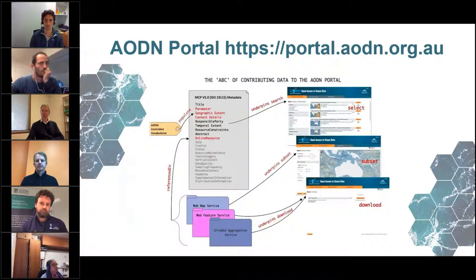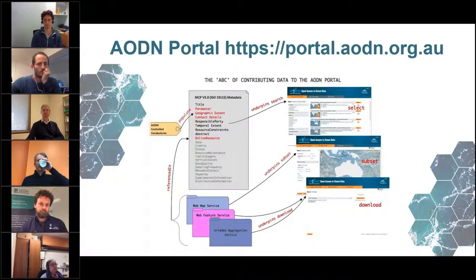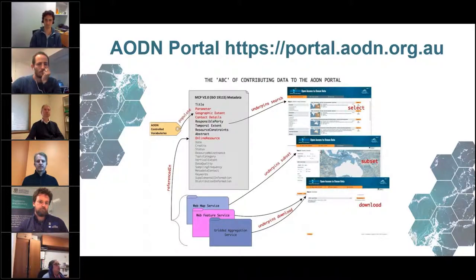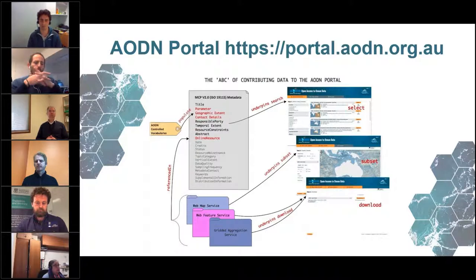Publishing data to the AODN portal means the portal is just a window — it consumes web services. It relies on metadata standards like ISO 19115 for the search interface, looking at different fields in the metadata to facilitate search using controlled vocabularies. The second part is web services: the portal consumes web map services for step two, and web feature services or other download services for step three.